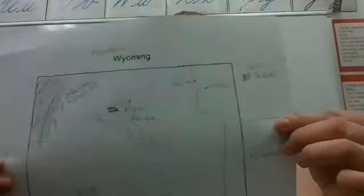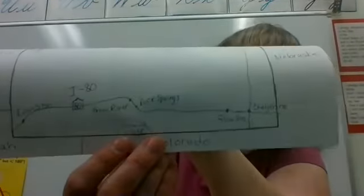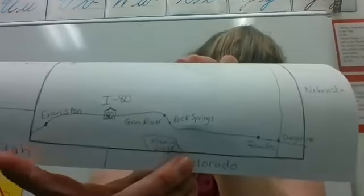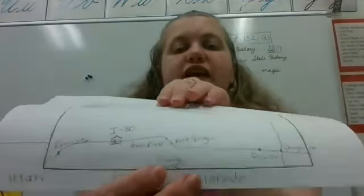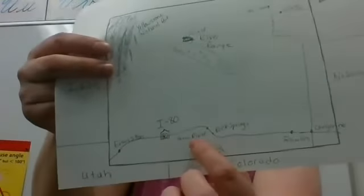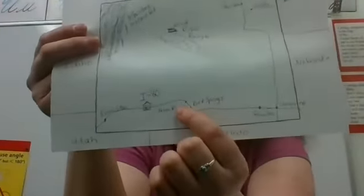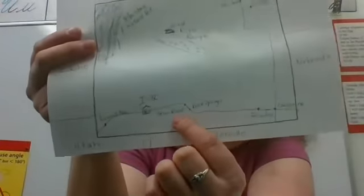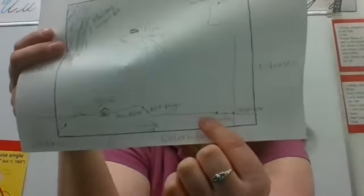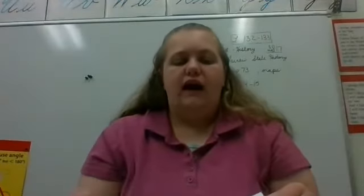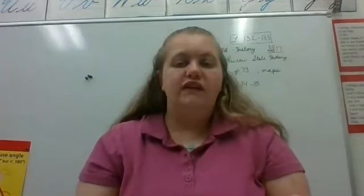People in Sheridan go to Billings for big shopping, like we go to Salt Lake. On the bottom of the map, there's Evanston — when you go into Utah you go through Evanston, along Interstate 80. Coming from Evanston, your first stop is Green River and then Rock Springs, and if you travel farther you come to Rawlins and then Cheyenne. This map will help you when studying for the test.